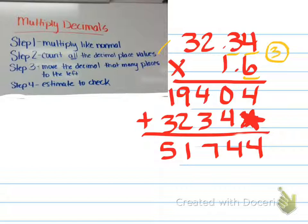So my invisible decimal is always at the end of any number. I'm going to take that invisible decimal and I'm going to move it one, two, three places to the left. And that is where my decimal will go. So my final answer is 51.744 or 51 and 744 thousandths.